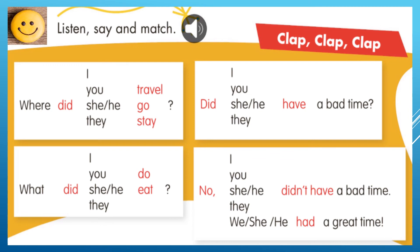Revisemos las respuestas: No, you didn't have a bad time. No, they didn't have a bad time. For example: Did she have a bad time? ¿Tuvo ella un mal tiempo? No, she didn't have a bad time — ella no tuvo un mal tiempo. She had a great time — ella tuvo un grandioso tiempo.